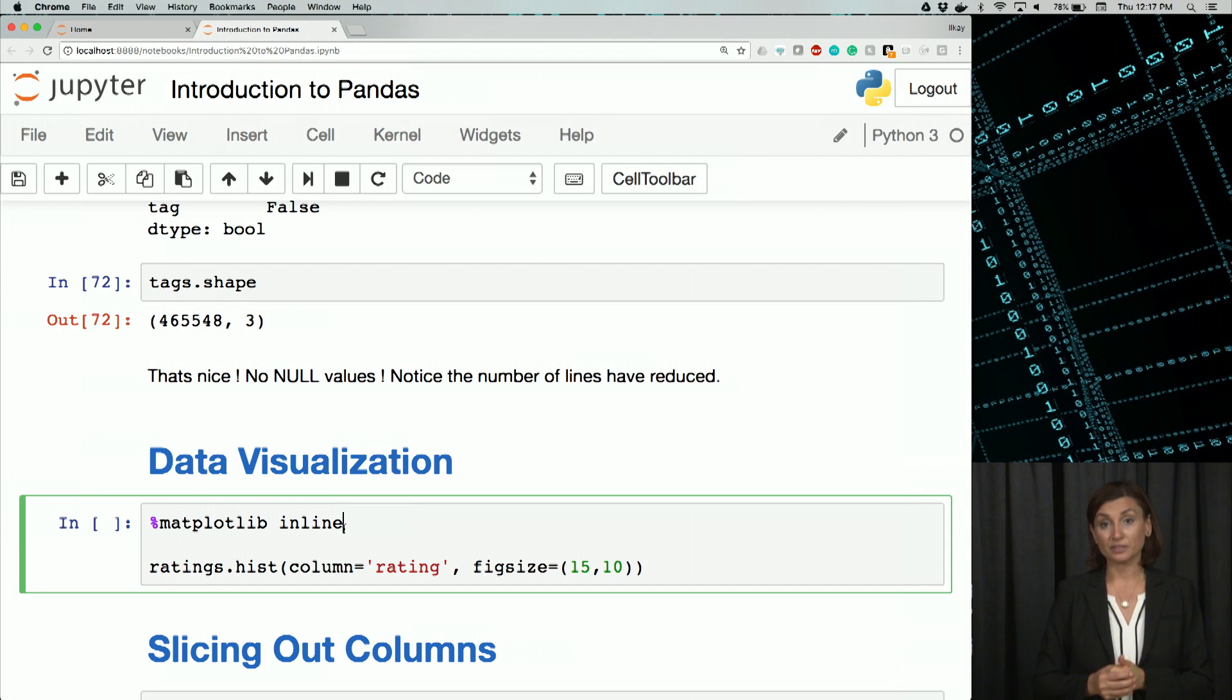So if you want Jupyter to plot the graphs inside the notebooks, we'll have to tell Jupyter to plot inline, as we see here. So notice the percentage sign before the Matplotlib in this notebook.